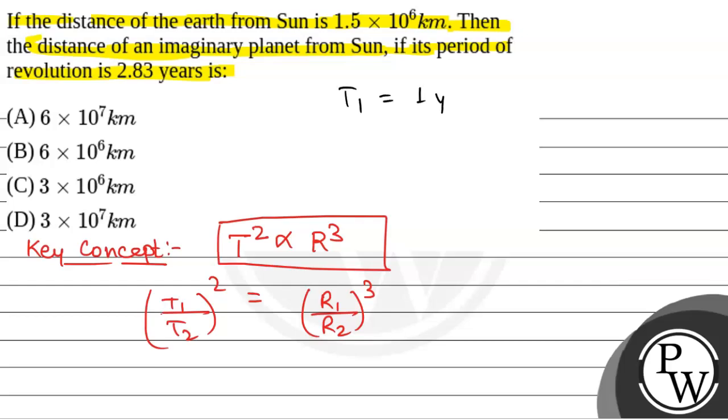T1 will be equal to 1 year. T2 will be equal to 2.83 years, that is time period of the revolution of imaginary planet. R1 is given as 1.5 into 10 to the power 6 kilometer and we have to find r2.